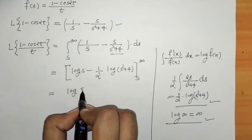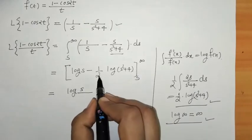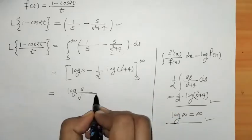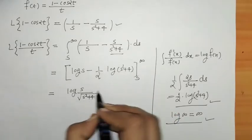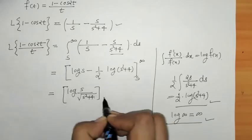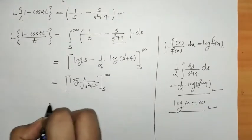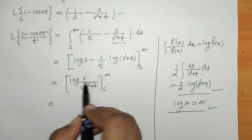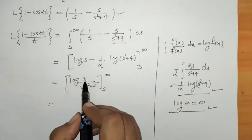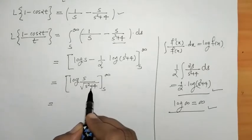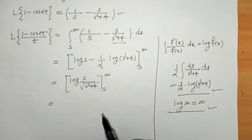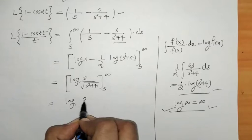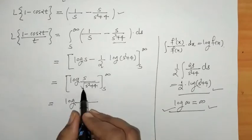By the log rule, we can write log(s) - (1/2)log(s² + 4) as log(s / √(s² + 4)). However, when we put s = infinity again, both numerator and denominator go to infinity, giving log(infinity/infinity), so we still need further adjustment.